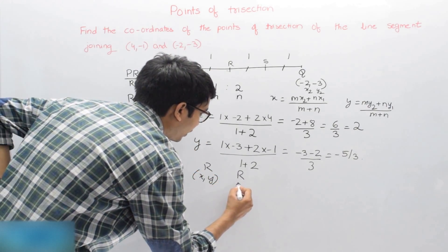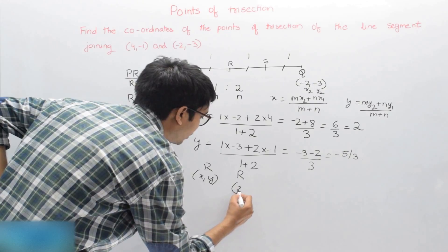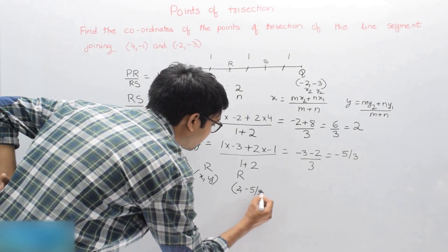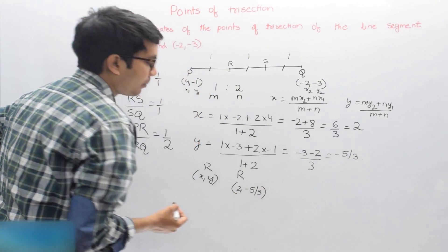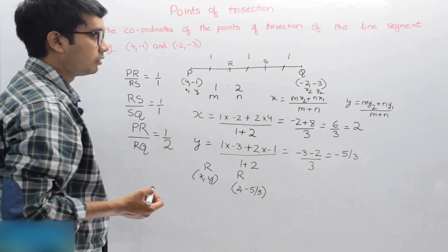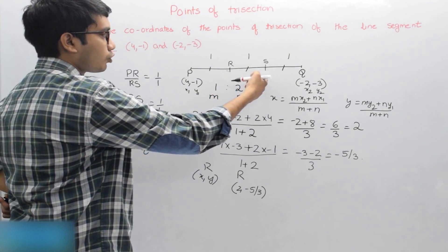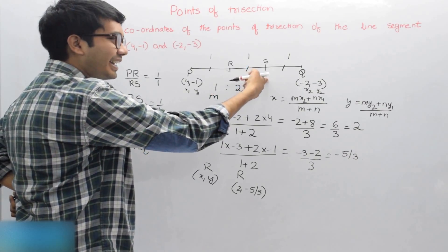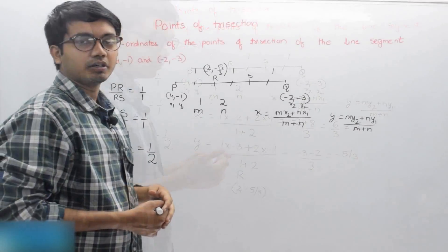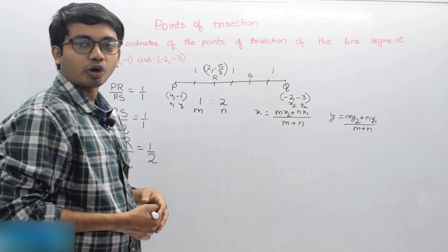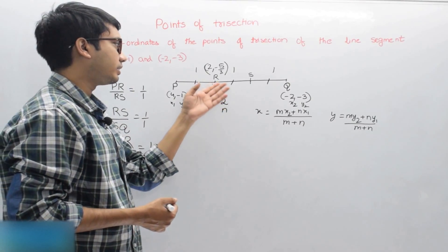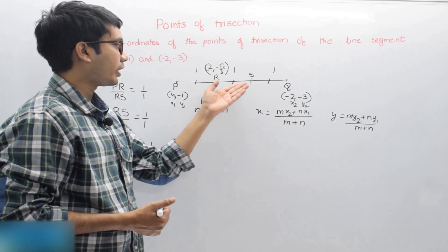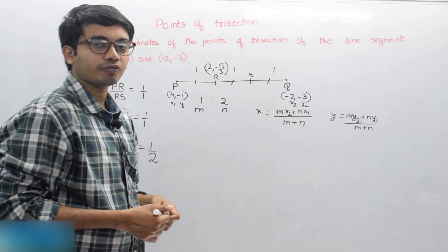So the coordinates of R are (2, -5/3). Now let's find the coordinates of S.